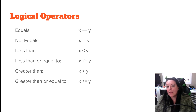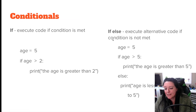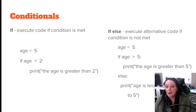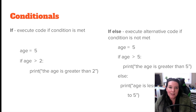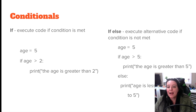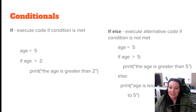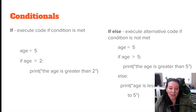We can combine this with our conditional statements to execute code when certain conditions are met. For example, we could say age equals five and then create a conditional statement: if age is greater than two, then it should print the statement 'the age is greater than two.' You could change the age number and run the test — as long as the number was greater than two, it would output the statement. That's an if statement using our logical operators.